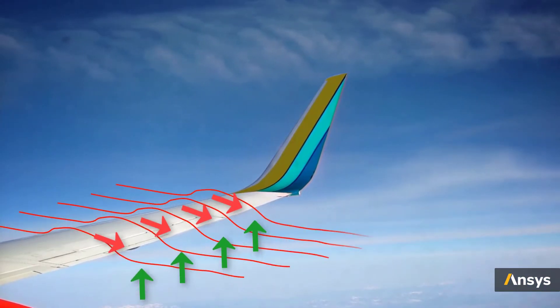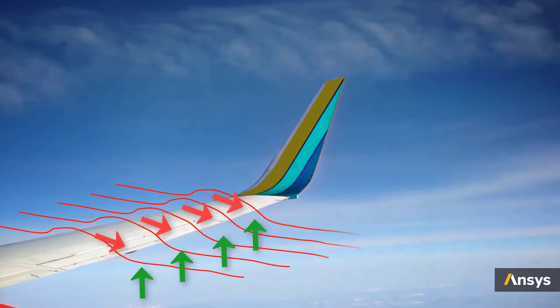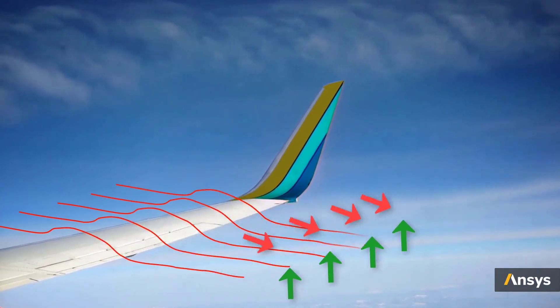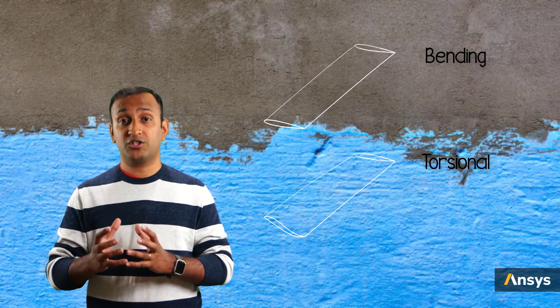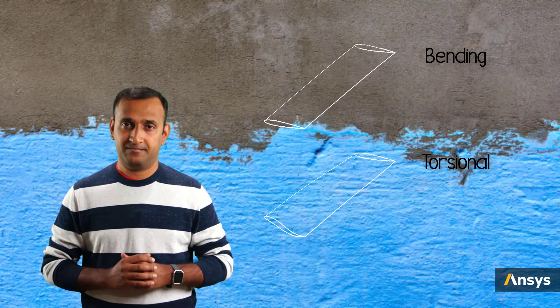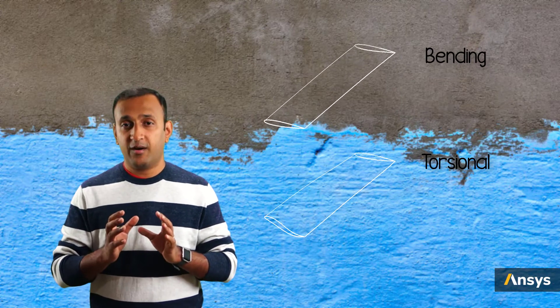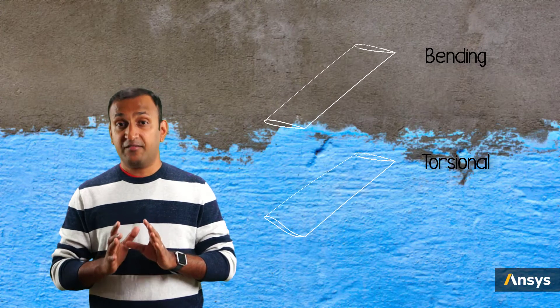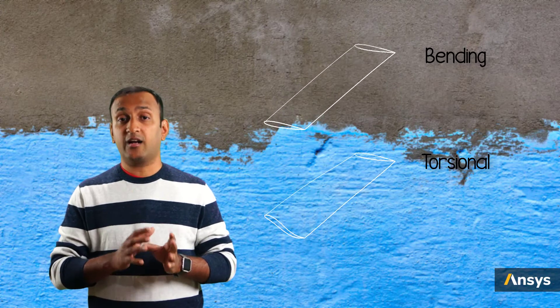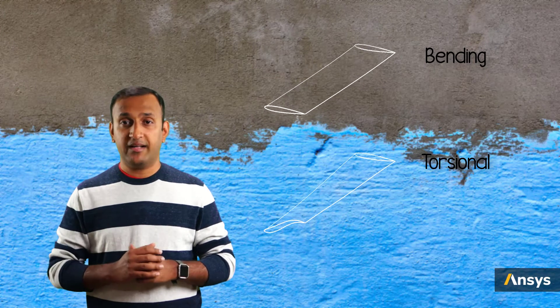Another common example that can potentially experience flutter is airplane wings. In case of airplane wings, the air creates lift and drag forces that act periodically on it. The wings are generally flexible and have both bending and torsional vibration modes. For a wing design, if both these vibration modes are close by and when they get excited by the wind forces, the wing starts vibrating violently before failing.